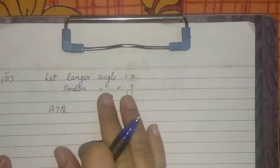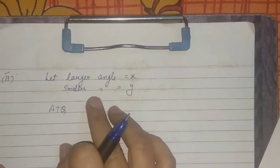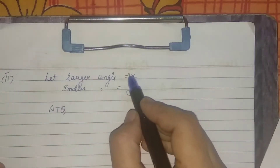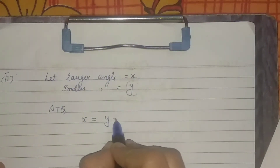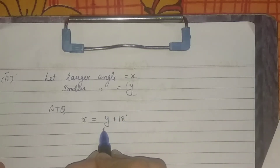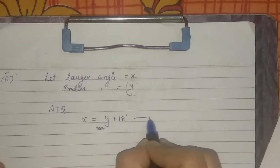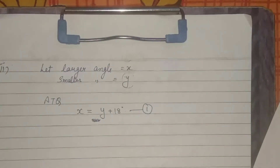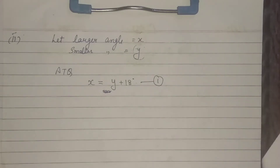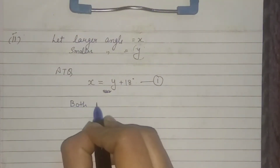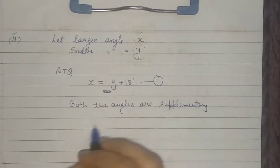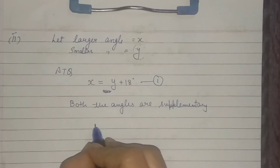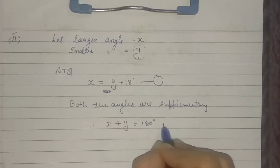From the first condition: x equals y plus 18 degrees. Rearranging, x minus y equals 18. This is equation 1. For supplementary angles, the sum of both angles is 180 degrees. So the second condition gives us x plus y equals 180. This is equation number 2.